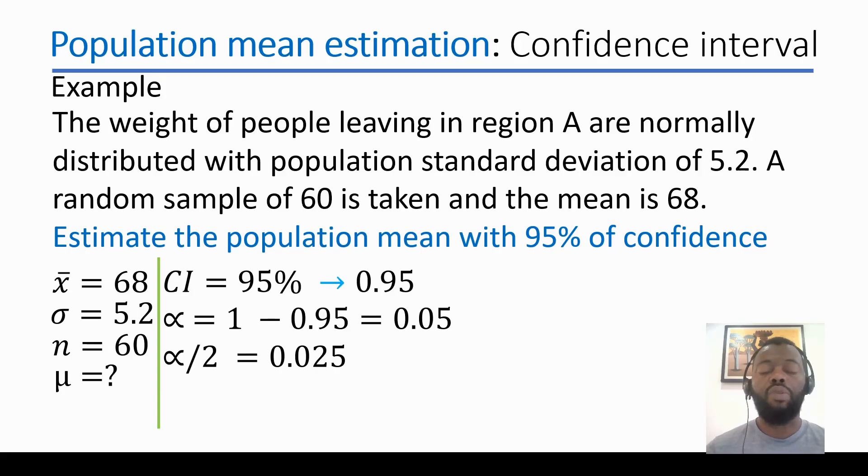We have the value of alpha divided by 2, which is 0.025, and we have the critical value from the normal distribution table at 1.96.